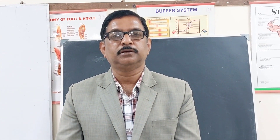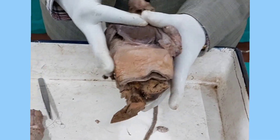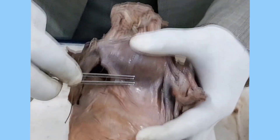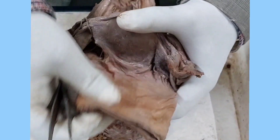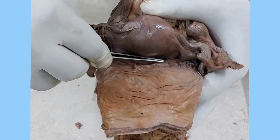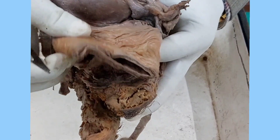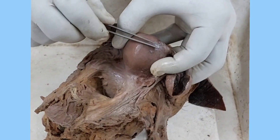Now I will show you the peritoneal relations of the uterus and its different folds forming the different ligaments. Anteriorly the uterus is covered by peritoneum, and if I trace it downwards, at the level of the internal os or isthmus, this peritoneum reflects onto the upper surface of the urinary bladder forming a depression called the utero-vesicle pouch anteriorly.